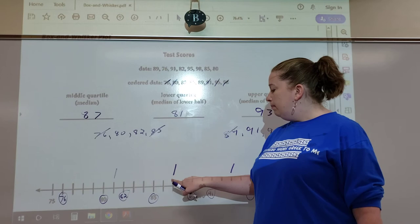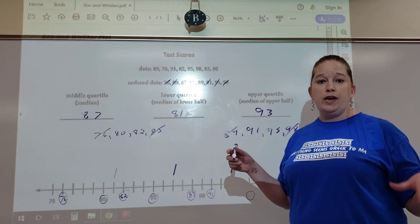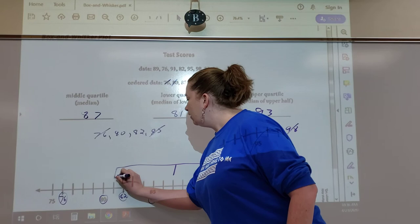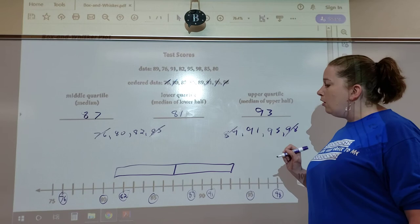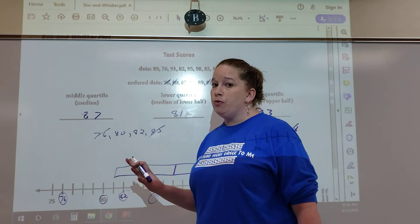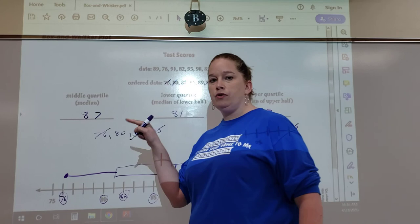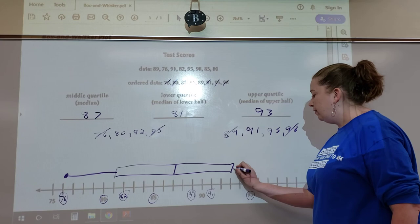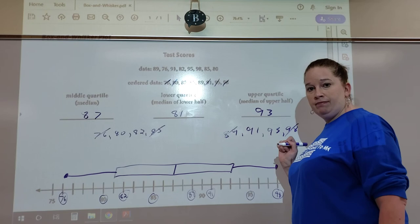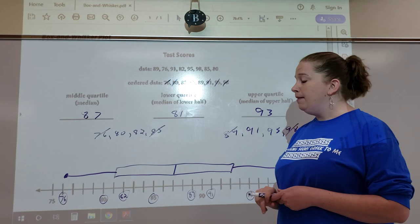Now here's what we do. This is why we call it a box and whisker plot. You're going to connect your lines - there's your box. Our whiskers are from the end of the box to our lowest data, which is 76, so we draw a line over there. Our upper whisker is from the box to our highest data point, which is 98.